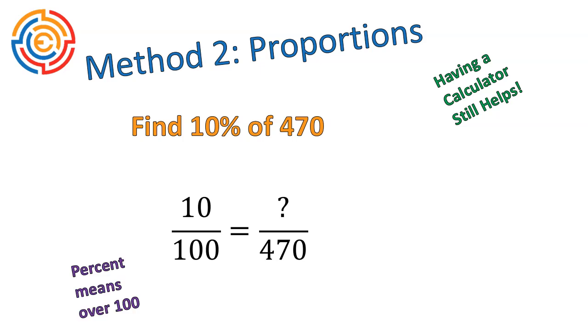This is the proportion that you would set up. Percent means over 100. So it's 10 over 100 is what, our unknown value, over 470. So we're saying 10% or 10 out of 100 is something out of 470. And then we solve using cross-multiplying. To do that, we multiply the numbers that are diagonal from each other, and then divide by the remaining number.